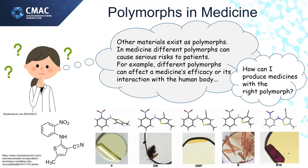Polymorphs of drugs are visibly different and can be identified by how they look. The crystals shown here are different polymorphs of the same drug and appear with different shapes and colours. However, most polymorphs are very difficult to tell apart and require special experiments to find out which one you have.